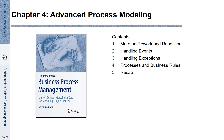Chapter 4 – Advanced Process Modeling. In this chapter, we discuss more on rework and repetition. We also discuss the handling of events and exceptions. Furthermore, we see how business rules can be integrated and represented in business process models.